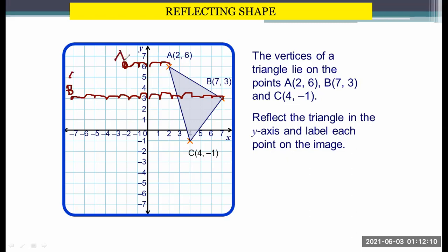And then here we have 1, 2, 3, 4 from the y-axis. So we will also move the same four steps to the left: 1, 2, 3, 4. This will be your C prime. So now we're going to draw a line connecting them. Basically, this is the image.